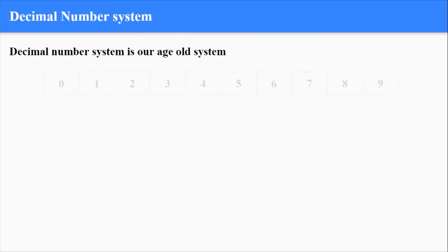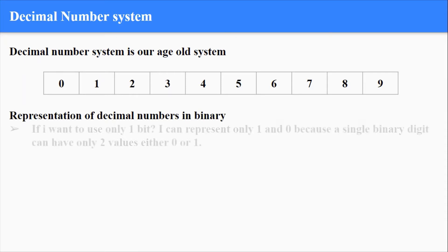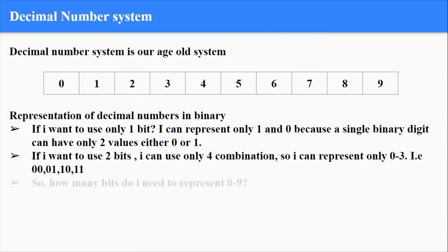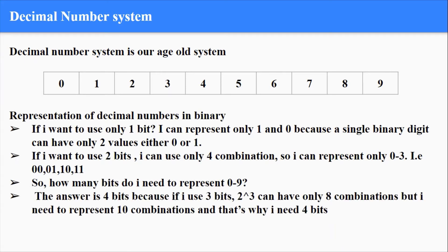The age-old number system that the humans were using since the Roman times and what we all have learned since childhood is a decimal number system. A single digit goes from 0 to 9 and you have totally 10 different values or symbols. Now if I want to represent a decimal number in binary, let us look into how many bits we need.